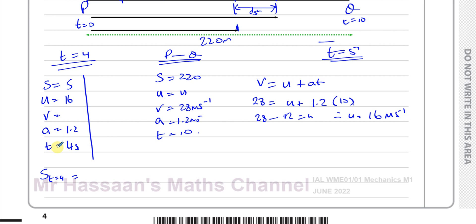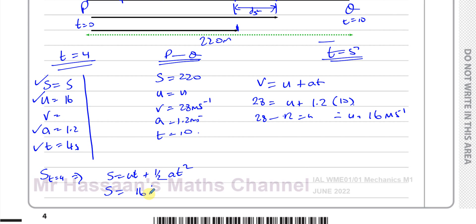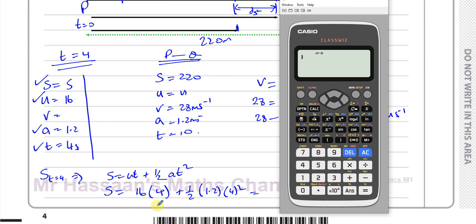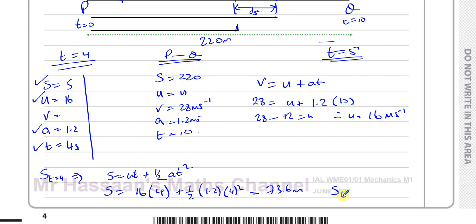Now I can use S = UT + ½AT² to find S when T equals 4. We have U = 16, T = 4, A = 1.2. So S = 16 × 4 + ½ × 1.2 × 4² = 64 + 0.5 × 1.2 × 16. That gives us 73.6 meters — the distance traveled from P when time equals 4 seconds.